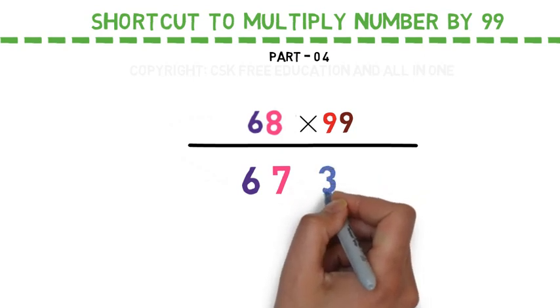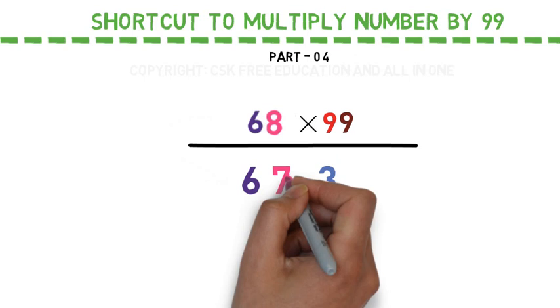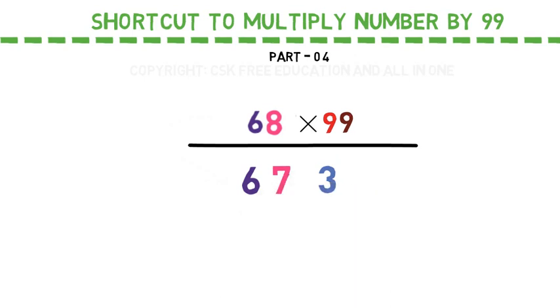Write it down and from the second 9, now subtract the 7, we get 2. Yes, this is as simple as this. 6732 is the right answer.